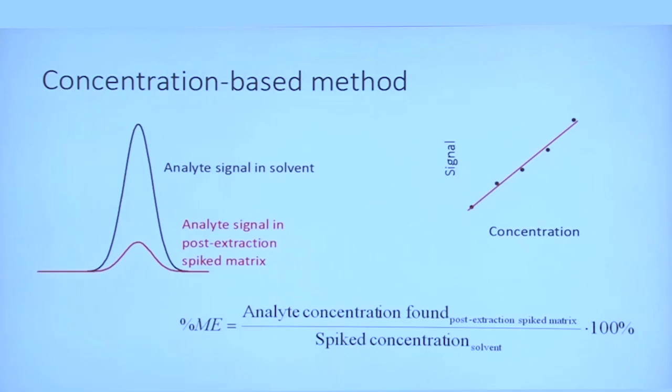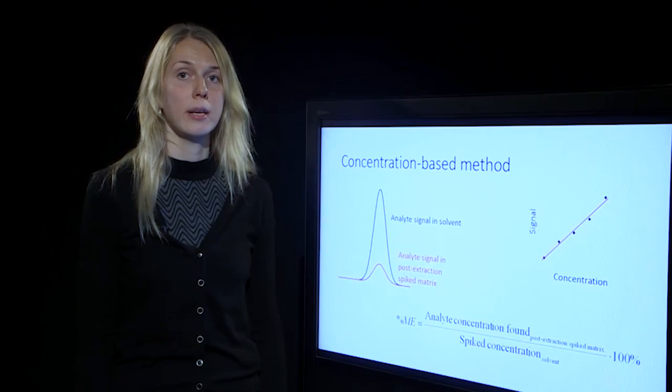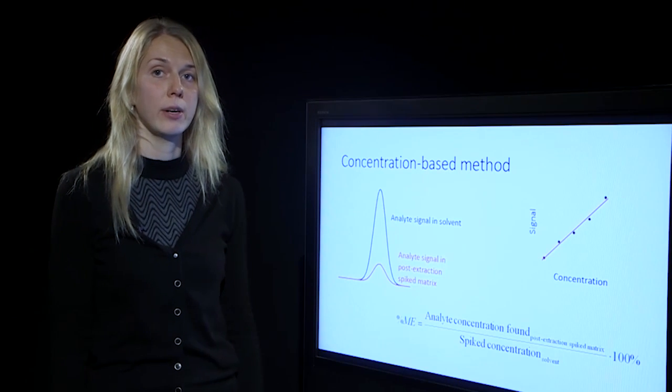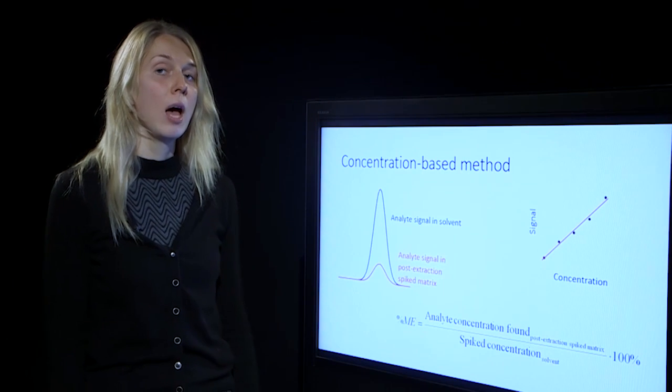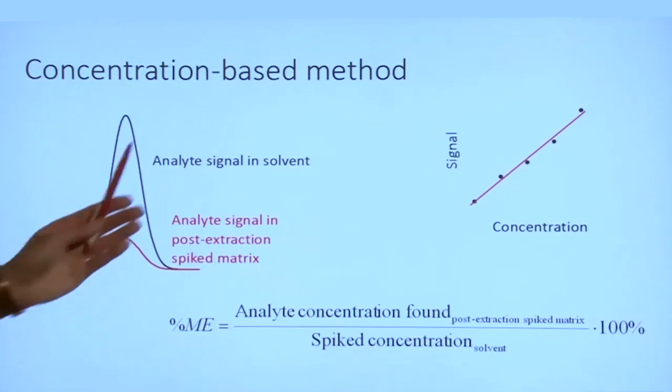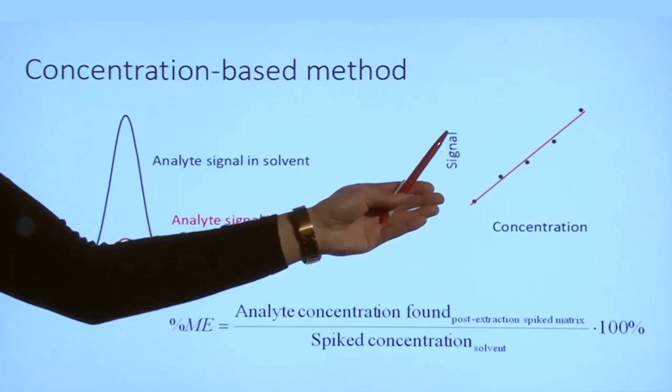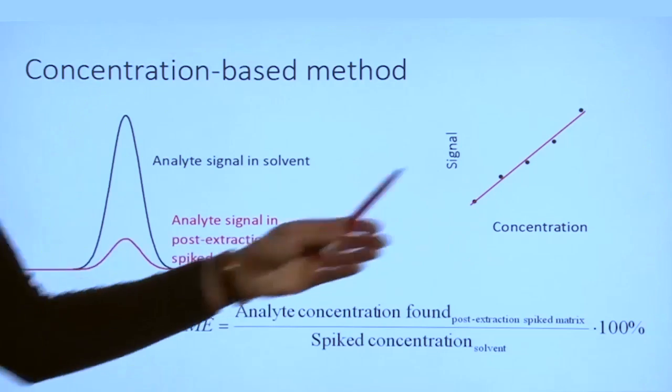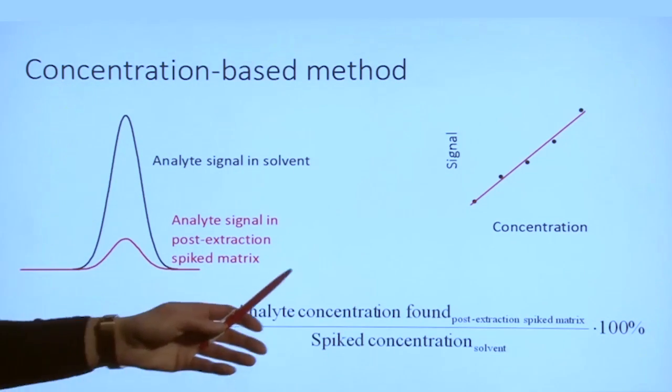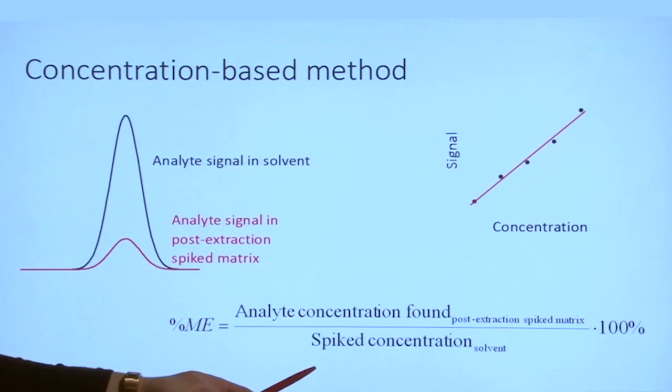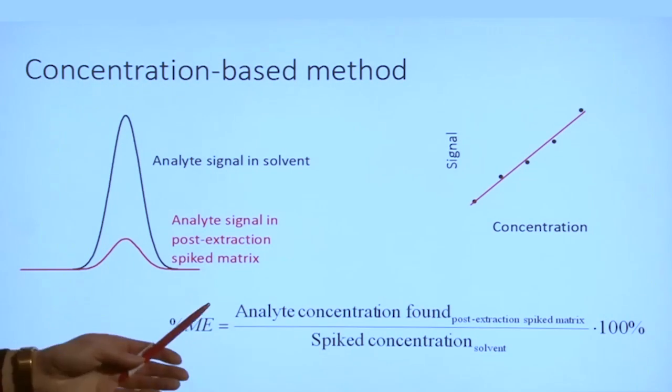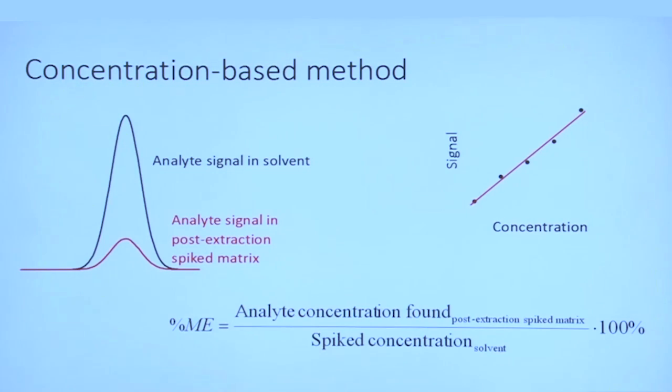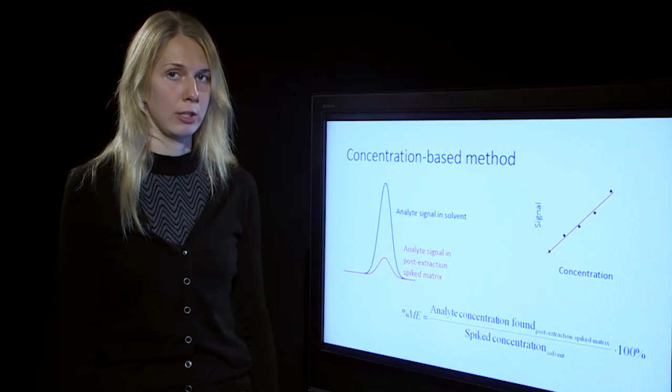In addition to signal-based calculations, concentration-based calculations can also be performed. This means that the analyte is spiked to the blank extract of sample with a known concentration. The solution is analyzed and the analyte signal is converted to concentration by using the calibration graph. This obtained analyte concentration is compared to the concentration that the sample was actually spiked and the matrix effect value is obtained. Concentration-based and signal-based calculations give very similar results in general.